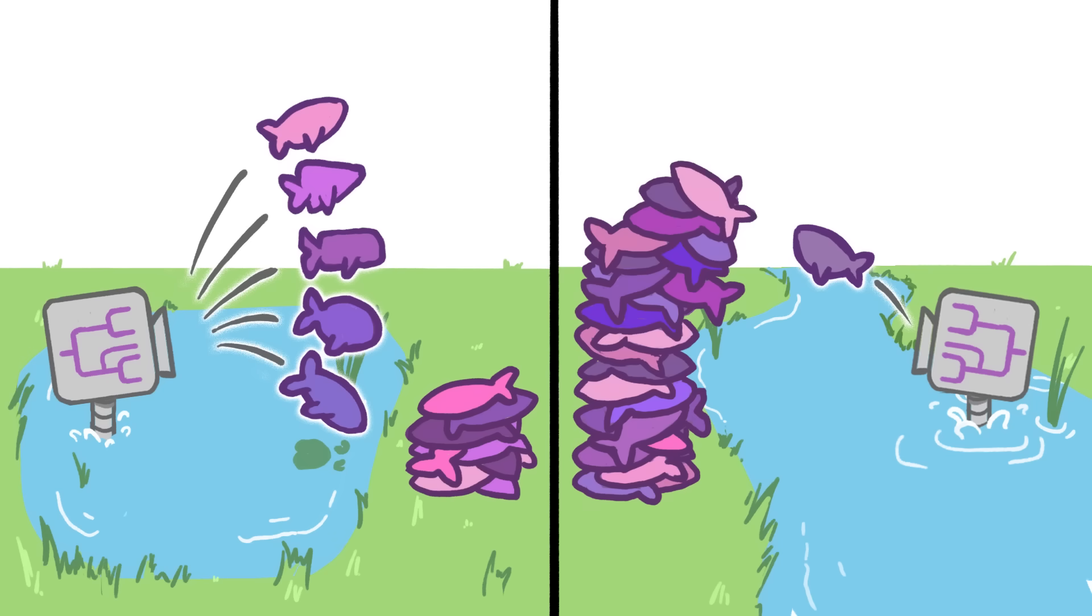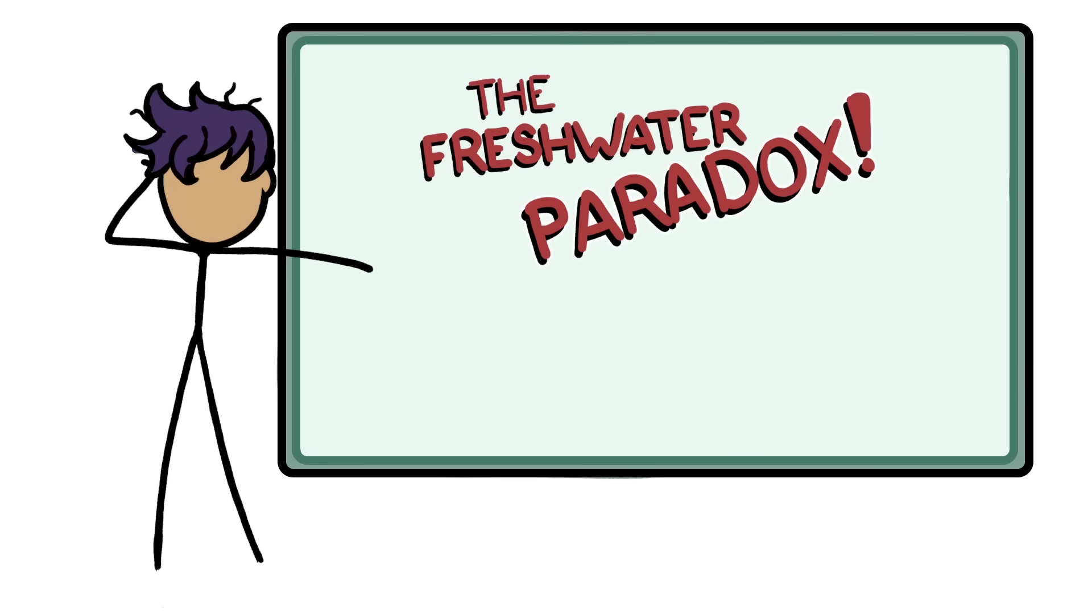There are way more fish species in rivers. The explanation of the freshwater paradox, then, may lie with something else: extinctions.